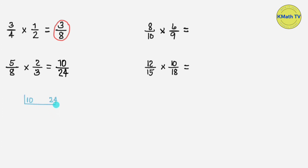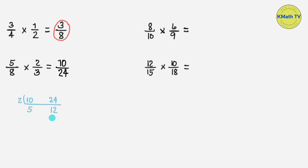What prime number can divide both 10 and 24? They are divisible by 2. 10 divided by 2 equals 5. 24 divided by 2 equals 12. 5 and 12 do not have any other common factor aside from 1, so we will not divide anymore. The GCF is the prime number we used as divisor. The GCF of 10 and 24 is 2.